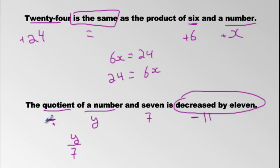I'm not going to use it. Don't use this thing here. Use the fraction division. So we have the quotient of a number and 7. Here's the number and 7. The quotient is decreased by 11.